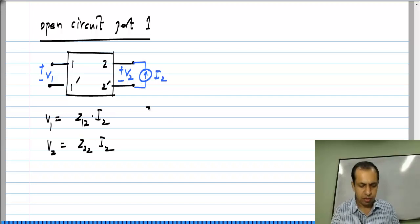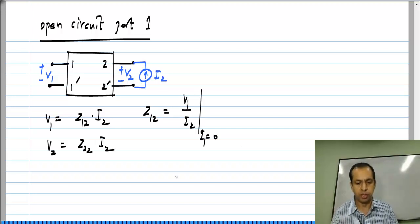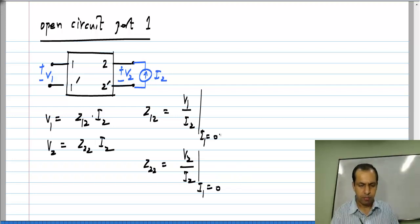So, from these we get Z12 to be V1 by I2 with I1 set to 0 that is port 1 open circuited and Z22 is V2 by I2 with I1 set to 0. That is Z22 is the resistance looking into port 2 with port 1 open circuited and Z12 is the trans resistance from port 2 to port 1 with port 1 open circuited. So, these are pretty simple definitions similar to Y parameters, it should be pretty clear.